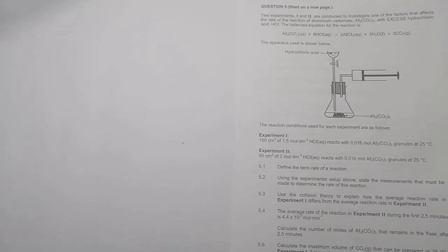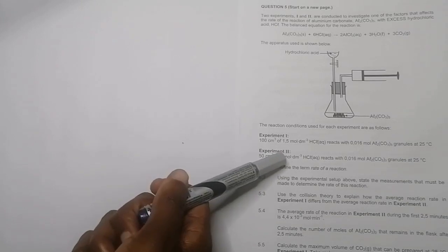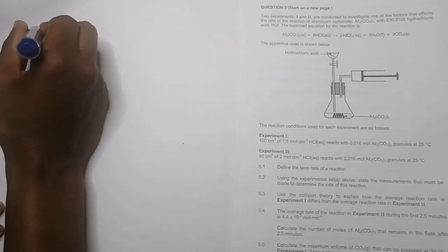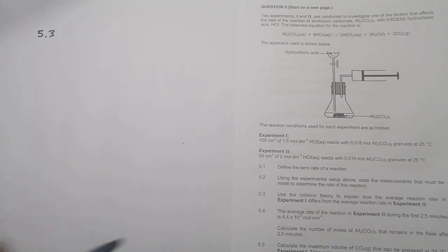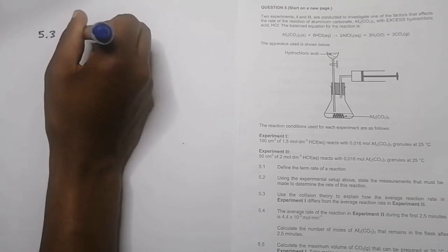The next question says to use the collision theory to explain how the average rate in experiment one differs from the average rate in experiment two. Looking at the two experiments, we see there is a higher concentration of hydrochloric acid in experiment two. To answer 5.3 using collision theory: an increase in concentration...